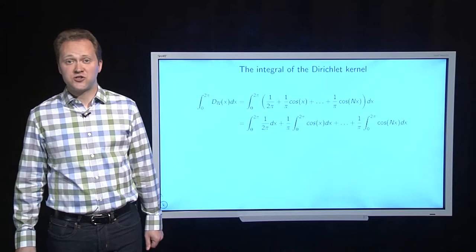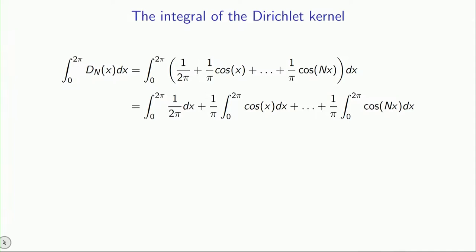Now, let's first look at the integral of the Dirichlet kernel. How big is it? What is the net area under the Dirichlet kernel? Well, you have an integral of a sum of a whole bunch of things. And so let's just break it up into a sum of a whole bunch of integrals. Now, integrating the first term, the constant term is easy. That just yields 1. What about the other integrals?